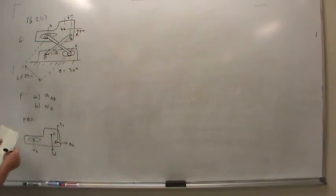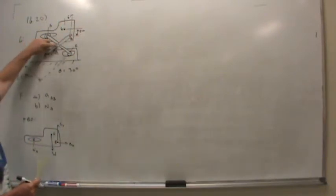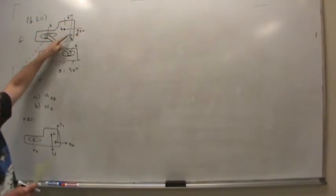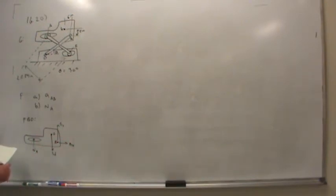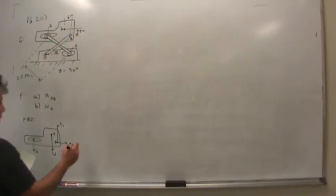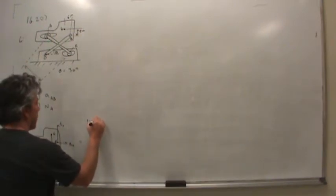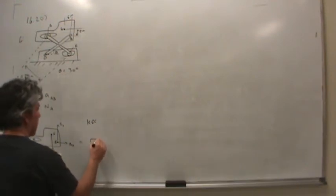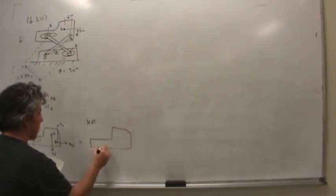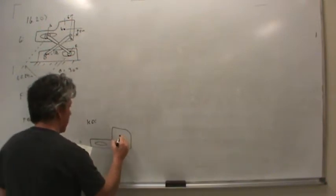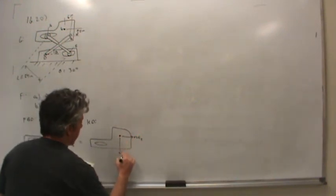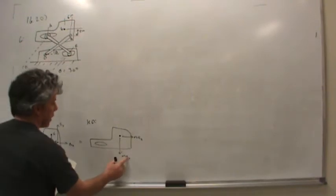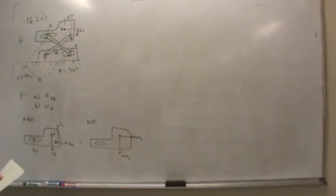At B, we don't really know the direction of the force. You might say it's a two-force member, but it's not — there's a connection at pin C in the center, so we can't say that. We don't know how Bx and By relate to each other. That equals the kinetic diagram, which has MAX and MAY, where I'll write MAY downward.